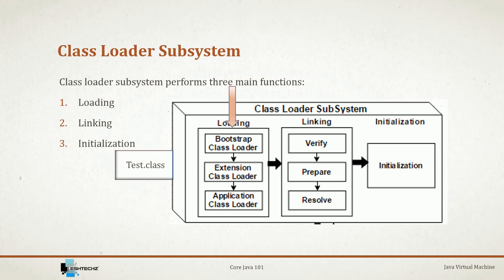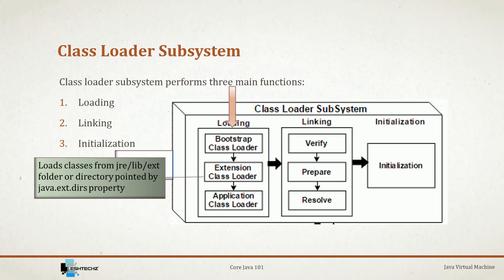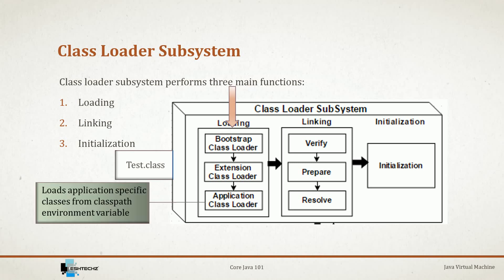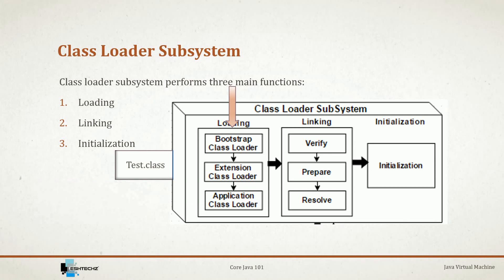The extension class loader delegates all loading requests to bootstrap, and if bootstrap is unable to load, then only it will load those classes from the jre/lib/ext folder or the directory pointed by the java.ext.dirs system property. The third is the application class loader, responsible for application-specific classes from the classpath environment variable. Extension and application class loaders are written in Java by implementing java.lang.ClassLoader, while bootstrap (primordial) is written mostly in C.